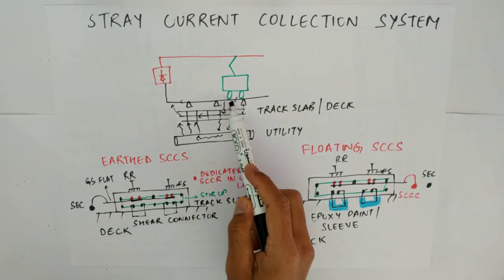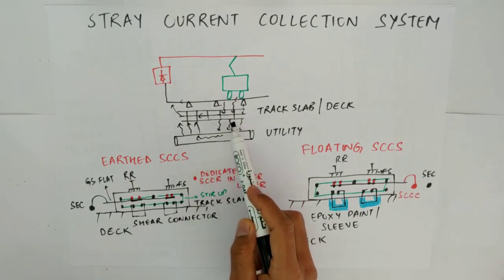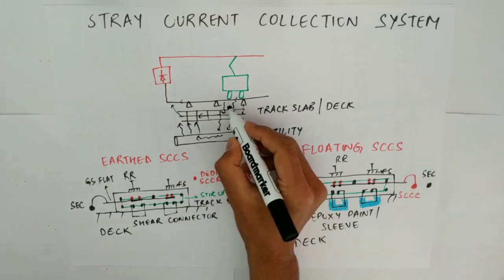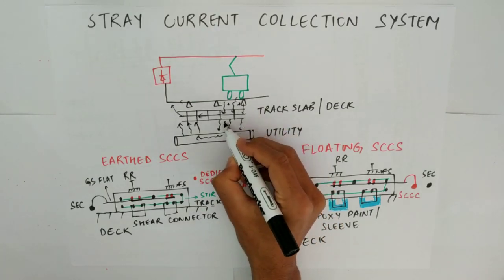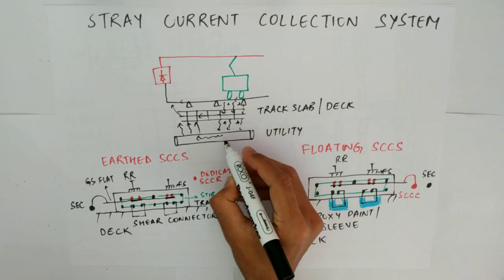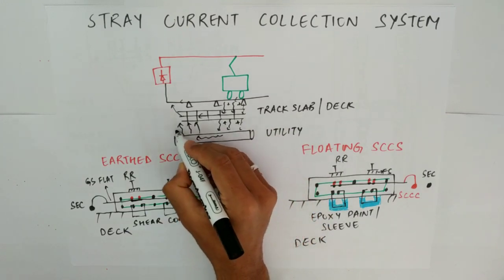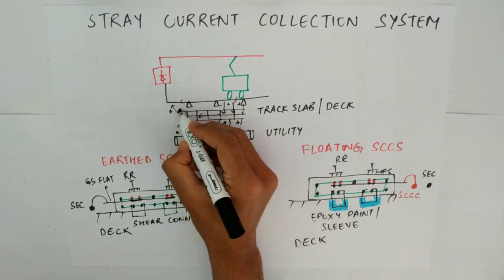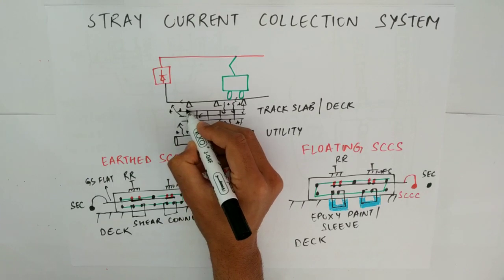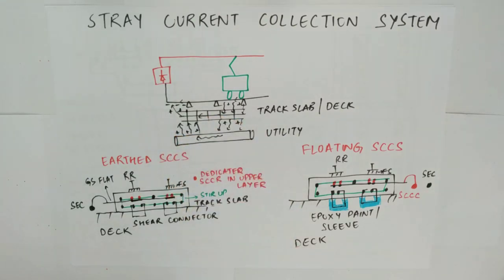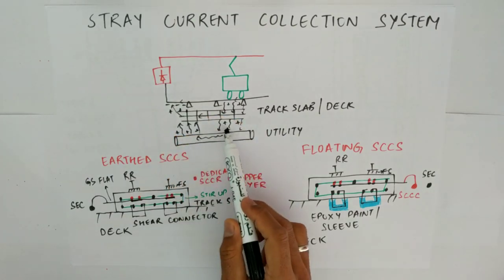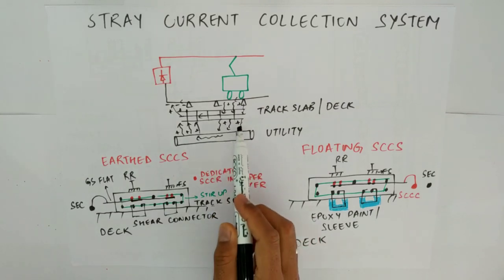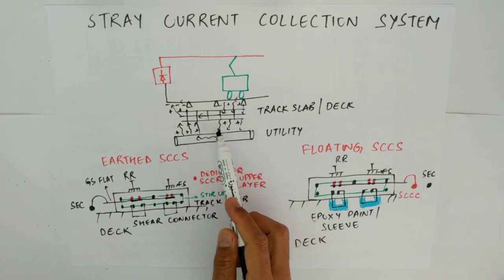Due to this leakage of current, this location becomes anodic and corrosion starts happening at these locations whenever the current is leaving the structure. So whenever the current is leaving the structure, corrosion will happen there — this we have discussed in lectures 1, 2 and 3.